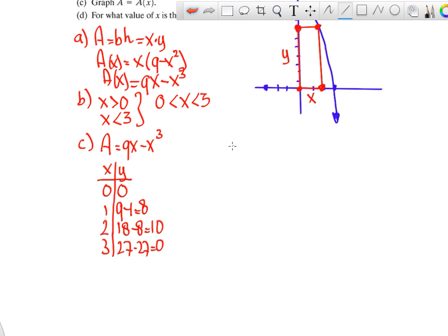So let's see. I need to go up to 10, it looks like. So 1, 2, 3, 4, 5, 6, 7, 8, 9, 10. So at 0, I'm at 0. At 1, I'm at 8. At 2, I'm at 10. And at 3, I'm back at 0. So I know it's a cubic, right? So it wiggles like this. Now, it looks like that might be the highest point.